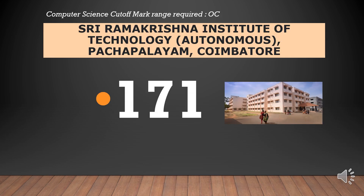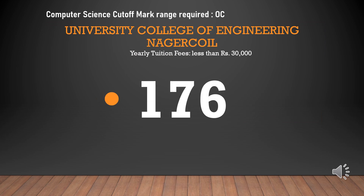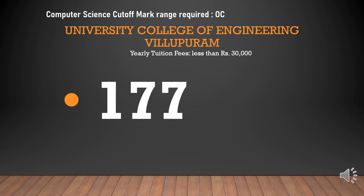University College of Engineering Kanchipuram — cut-off required for CSEOC is 182. Sri Ramakrishna Institute of Technology — cut-off required for CSEOC is 171. University College of Engineering Nagercoil — cut-off required for CSEOC is 176. University College of Engineering Villupuram — cut-off required for CSEOC is 177.